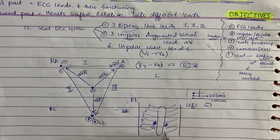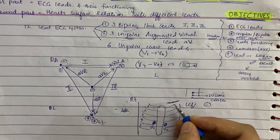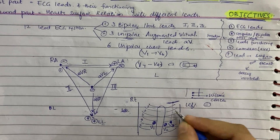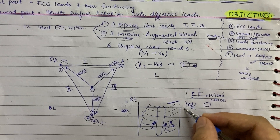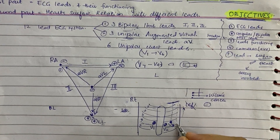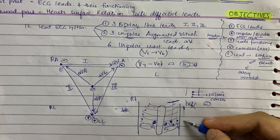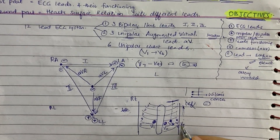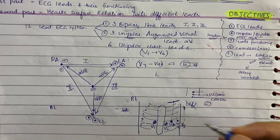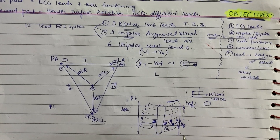Continuing chest lead placement: V3 is placed in the mid-clavicular line downward from the clavicle. The patient's axilla defines the axillary lines — anterior to the mid-axillary line is the anterior axillary line, where we attach V4. In the fifth intercostal space along the mid-axillary line, we place V5, and behind it in the mid-axillary line we place V6. So V5 is in the anterior axillary line and V6 is in the mid-axillary line, both at the fifth intercostal space.